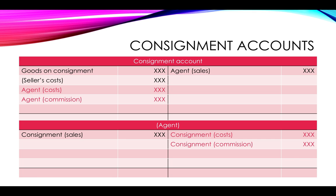You will then also need to take into account any costs that the agent incurs as well as their commission. You will probably receive a statement from them showing all the sales less all the costs and commission that are due to them. These need to be recorded in your consignment account as well as in the agent's account, as it reduces the amount that they owe you — since you actually owe them both the commission and the costs. In this agent's liability account, you can see the net effect of how much actually needs to be paid.